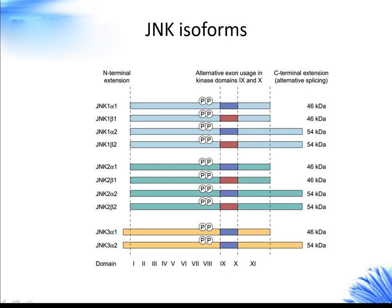The mitogen-activated protein kinase family of JNKs includes JNK1 and JNK2, which are ubiquitous, and JNK3, which is present primarily in the heart, brain, and testis. Differential splicing and exon use yield 10 isoforms of JNK.